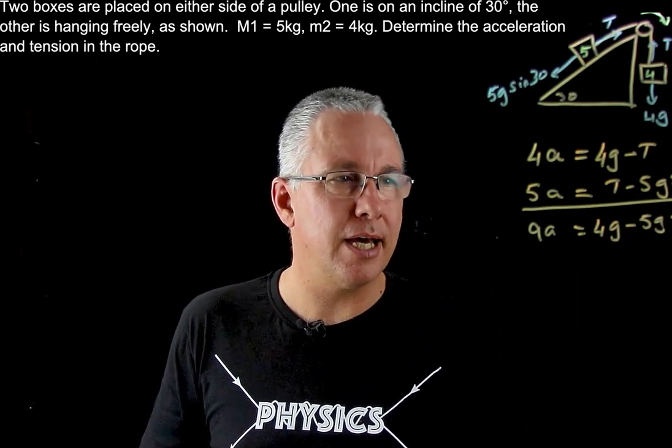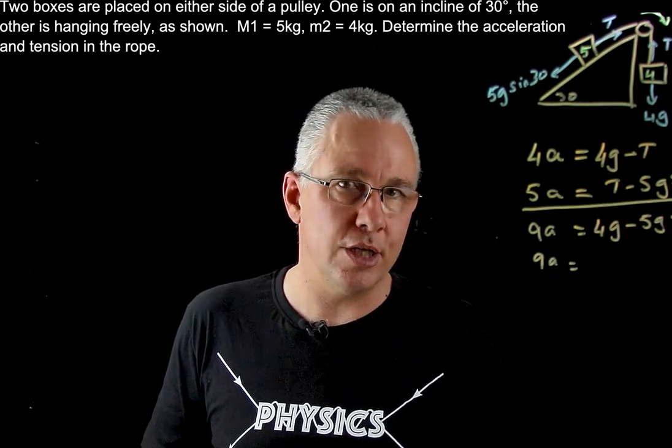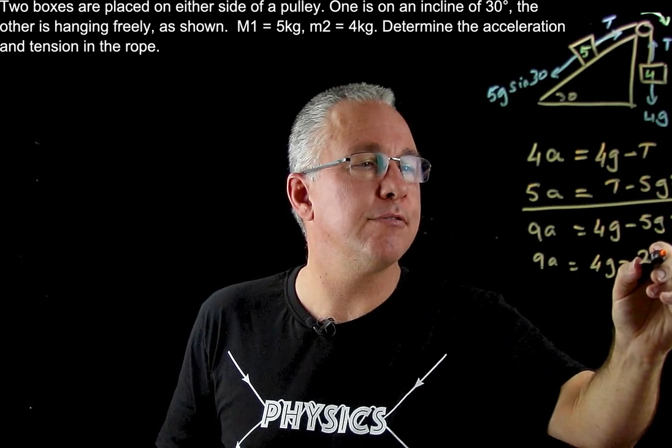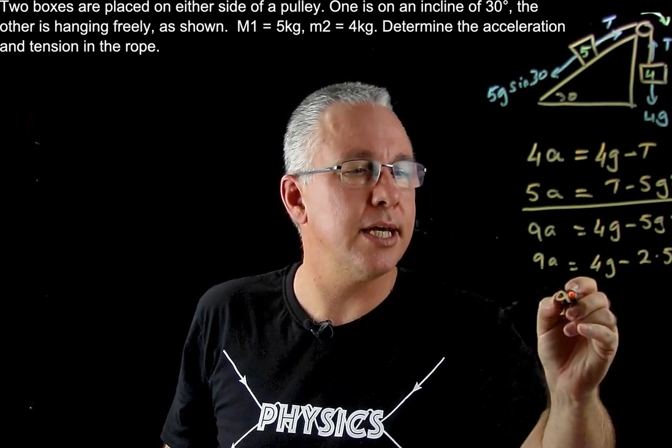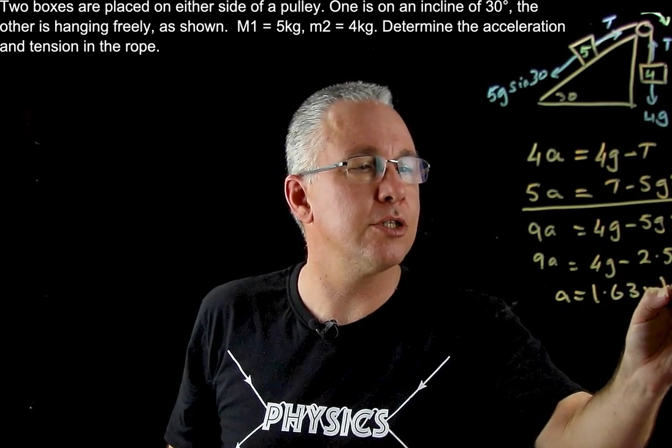Of course I can simplify that. I'm going to get 9a is equal to, now sine 30 is a half, so what I get is 4g minus 2.5g. Of course you can now work out the acceleration. My acceleration ends up being 1.63 meters per second squared.